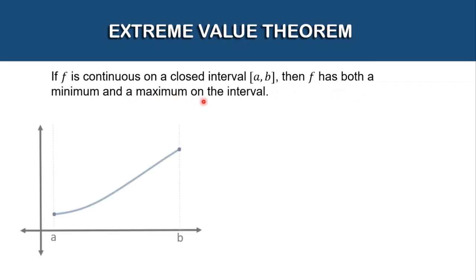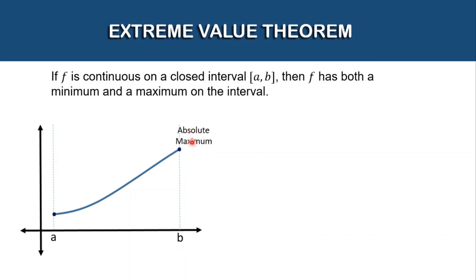Let's consider this graph. This is just a portion of the graph of a function on the closed interval from a to b. This point is the highest, and this is called the absolute maximum. And this point is the lowest, and this is called the absolute minimum.